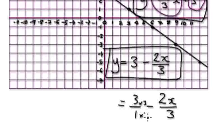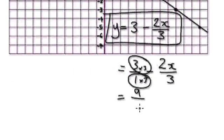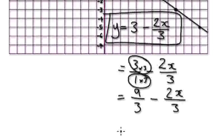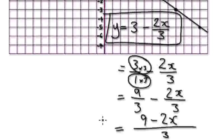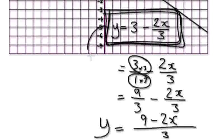In order to add fractions, the two denominators need to be the same. So these two together give a denominator of 3, and 3 times 1 is 3. Now you can see the two denominators are the same, so you can just merge them: 9 minus 2x all over 3. This is your equation for that line. Normally you can just leave it as 3 minus 2x over 3 — that's still good enough. In the next video, you can have a go for yourself.